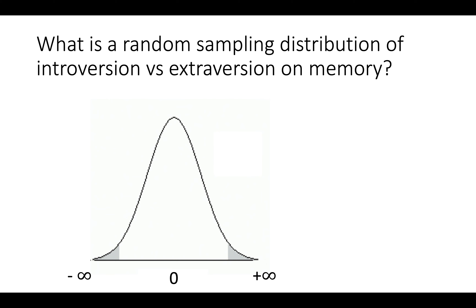This is the shape — this is our ruler. This is what we need to calculate our p-values. It's all set up because we assume the null hypothesis is true. If the null hypothesis were true, the probability of sampling a mean difference of zero is quite high. What is the probability of sampling any mean difference from negative infinity to positive infinity if the null hypothesis were true and the actual population mean difference were zero? We can figure that out with this shape.